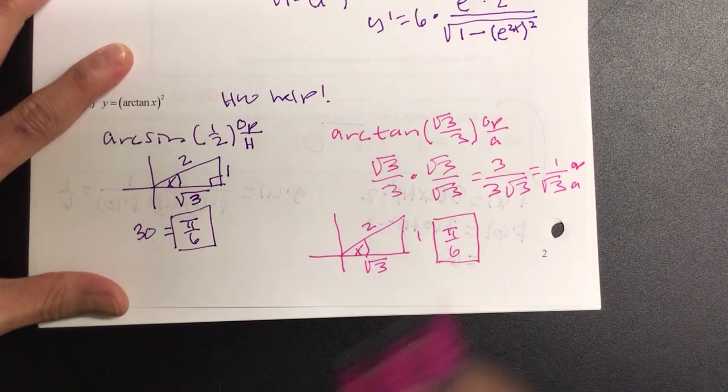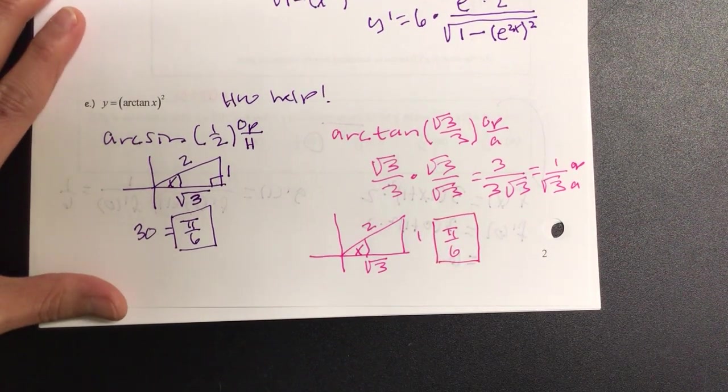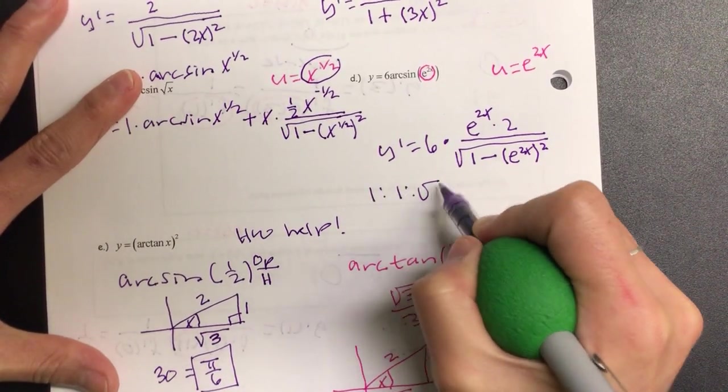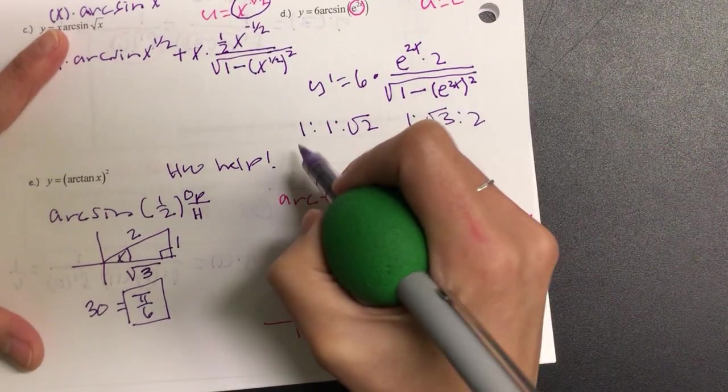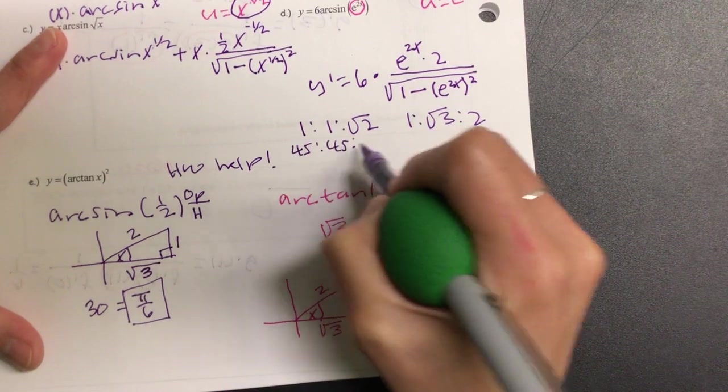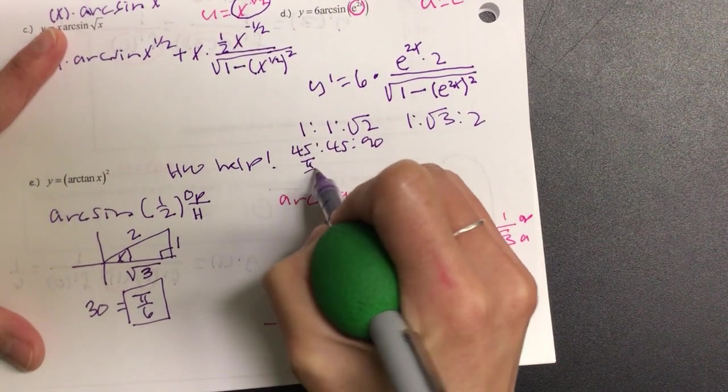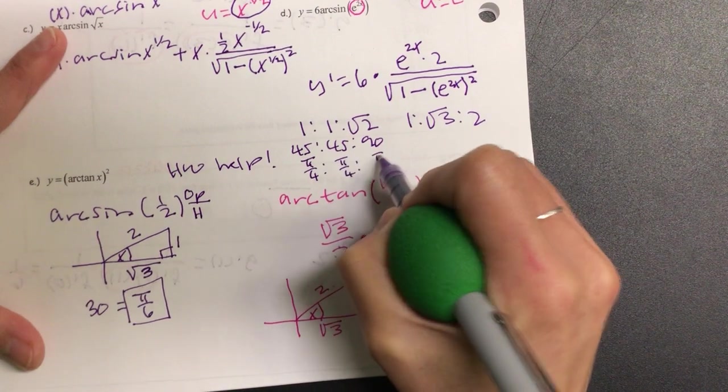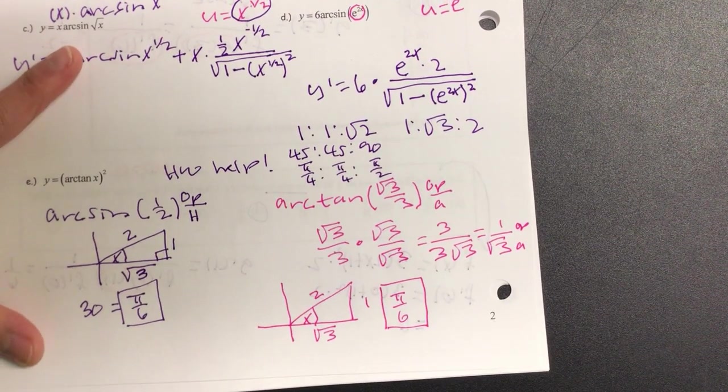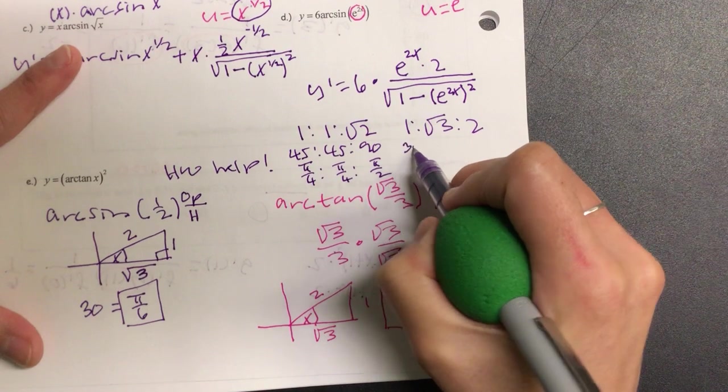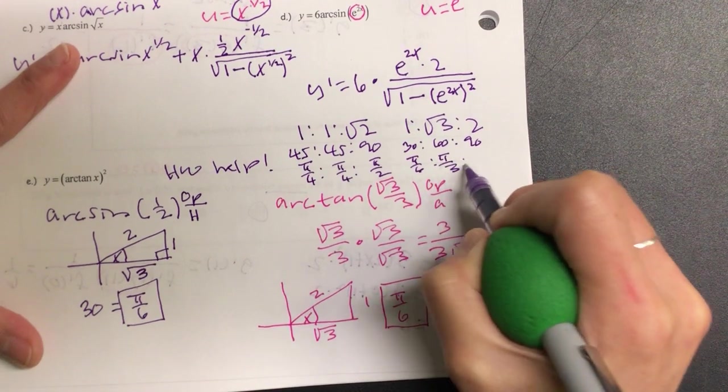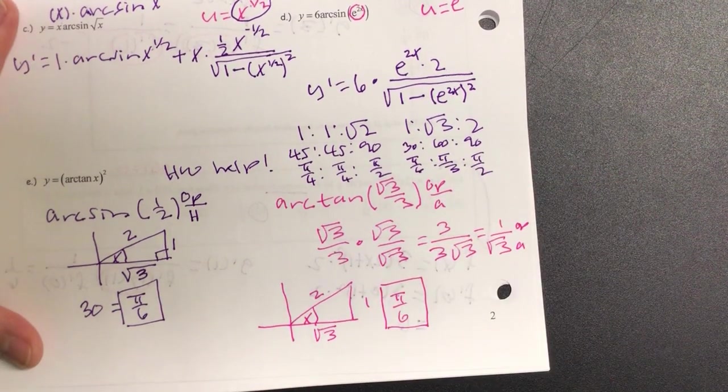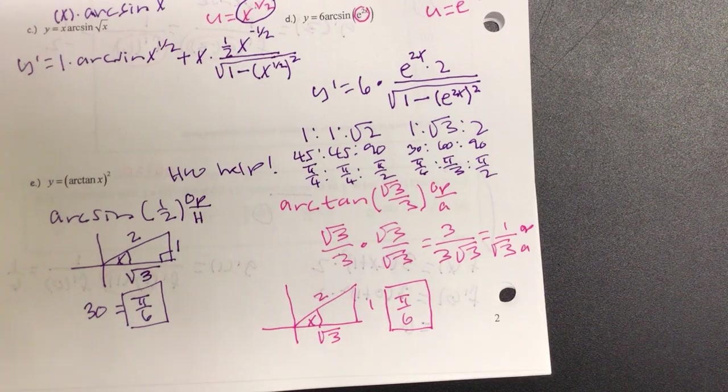Do we need a reminder on the special right triangle real quick? The ratios? Yeah. Okay. Let's write out. We have 1, 1, √2. And we also have 1, √3, and 2. And if y'all remember, it was 45, 45, 90. Which was π over 4, π over 4, and π over 2. And we used that the whole semester. And then we had 30, 60, 90, π over 6, π over 3, π over 2. Good? Good.